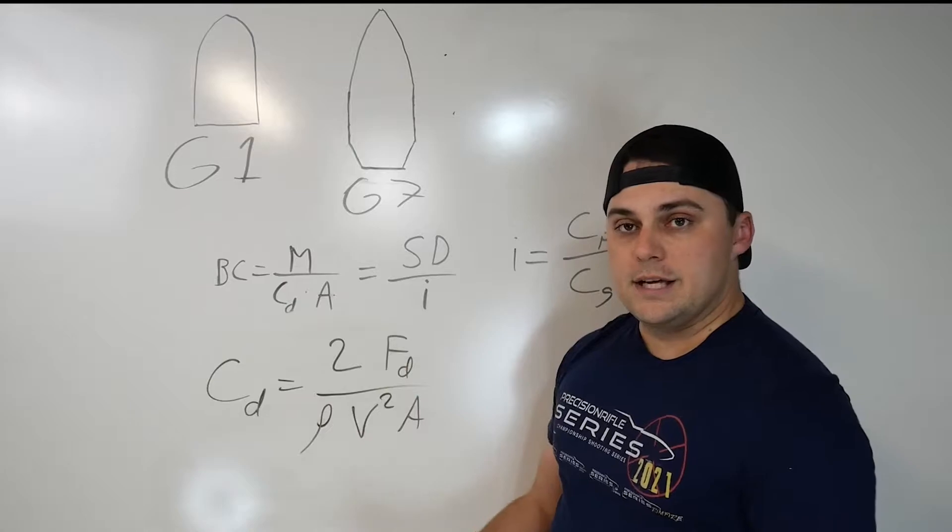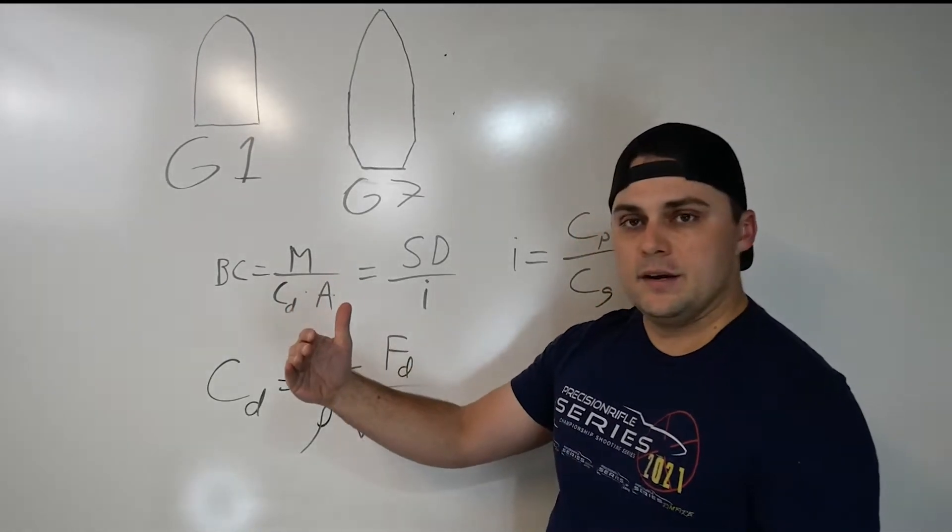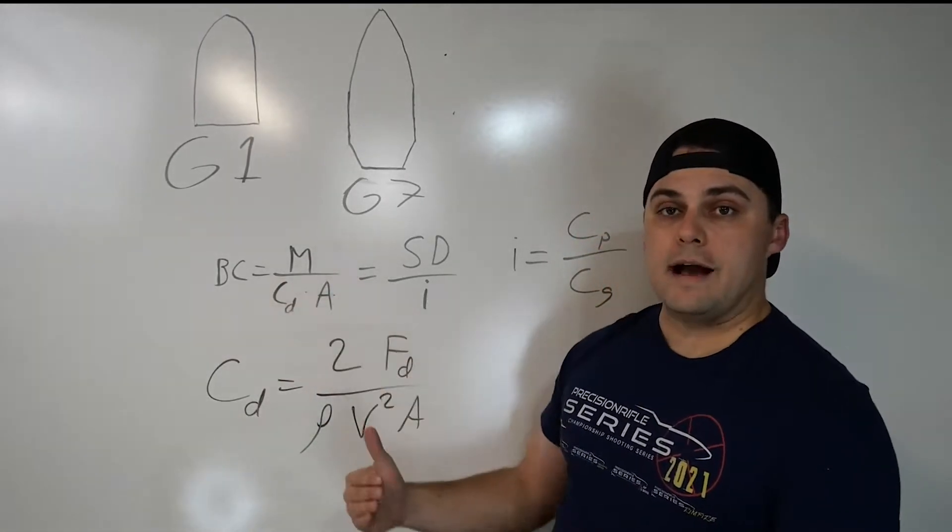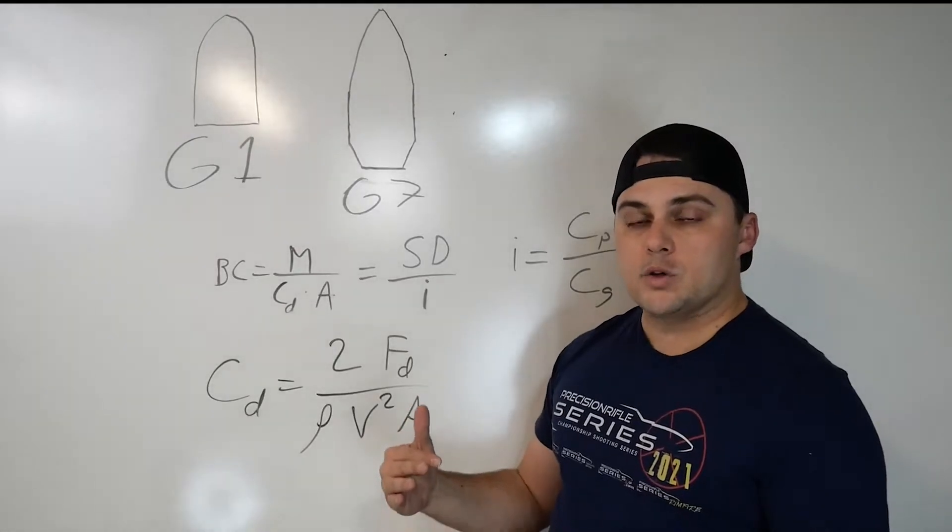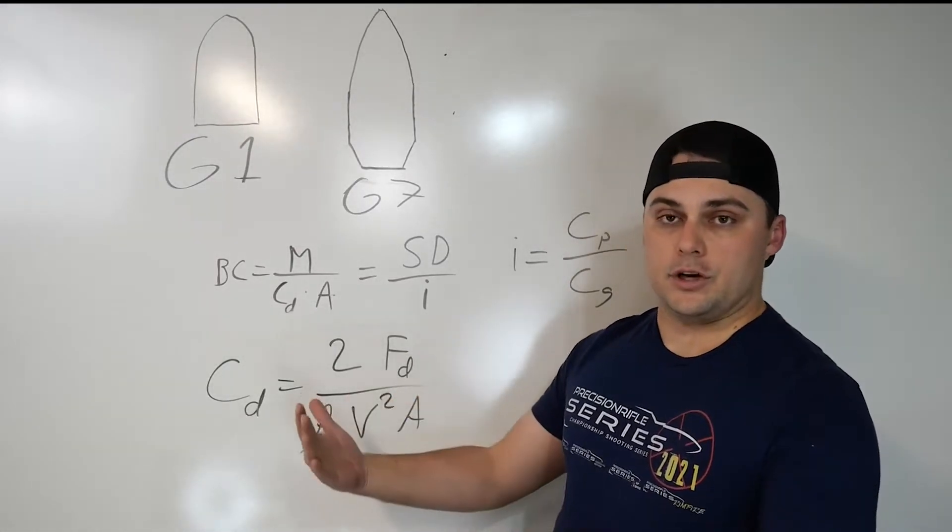So when you're picking a BC, you want a high BC, which translates to a low drag factor. So you want as little drag as possible, which ends up giving you a high ballistic coefficient.